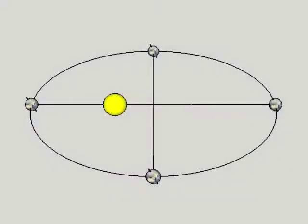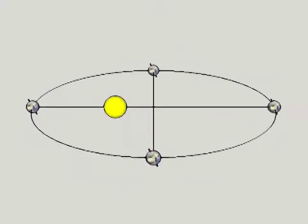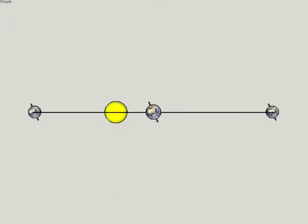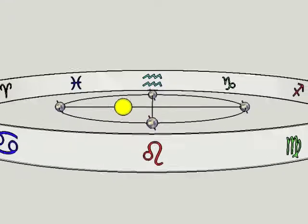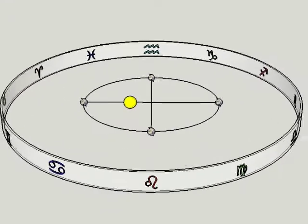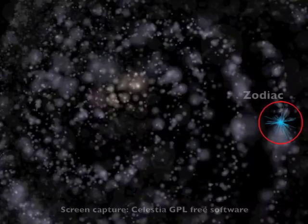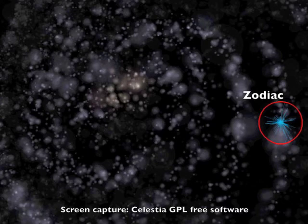The earth revolves about the sun in a plane called the ecliptic. The 12 constellations of fixed stars that intersect the ecliptic are called the zodiac. All the stars of the zodiac are actually our close neighbors compared to the size of our entire galaxy.